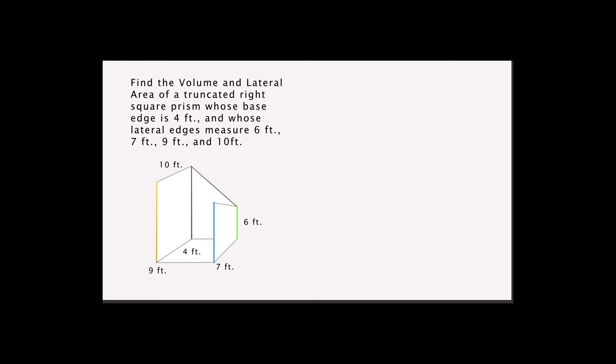The formula for volume is V equals B times L, where B is equal to the area of the right section or area of the base. And L is equal to L1 plus L2 so on so forth over N, where N is the number of sides in its base.